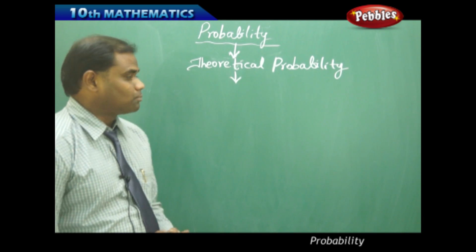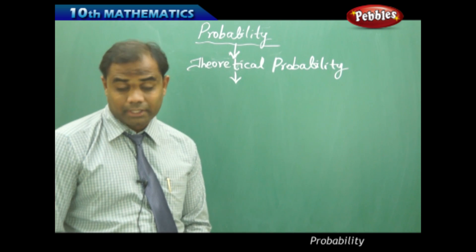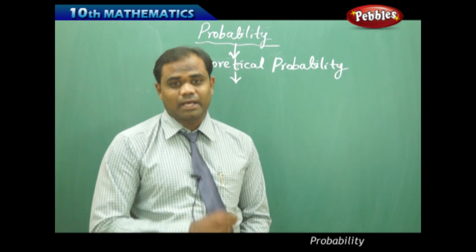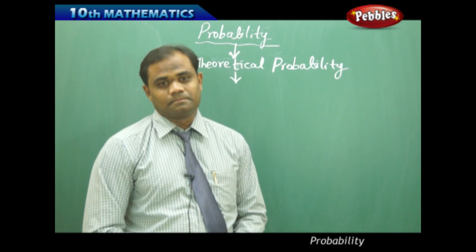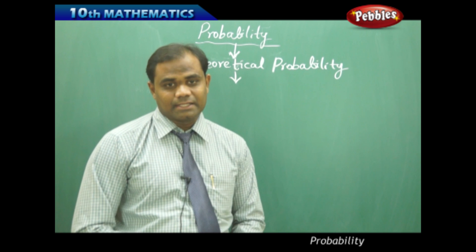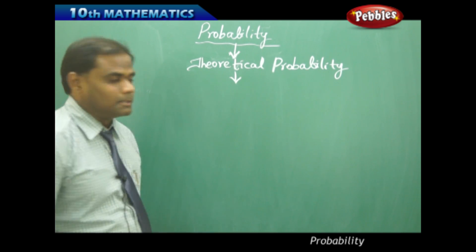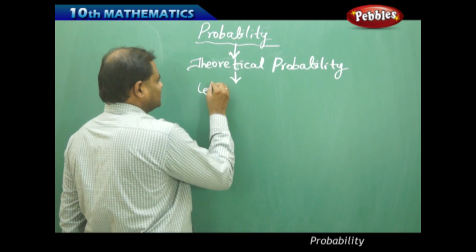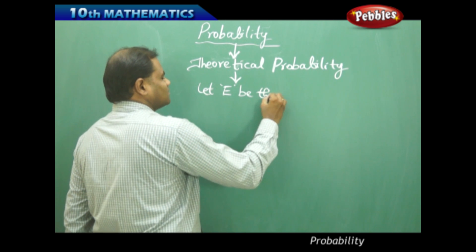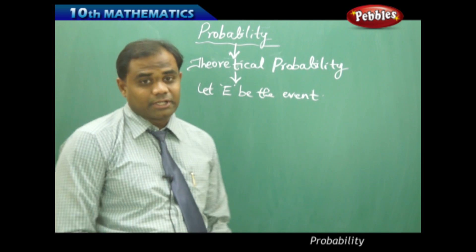Let's focus on theoretical probability, since most problems in this session are related to it — finding the chance of happening and not happening through theoretical probability. Theoretical probability has its own definition and formula. Let e be the event, which depends on the situation of the problem.